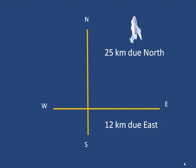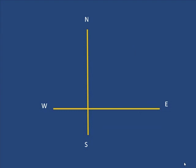I can represent these motions by two lines with arrows. One east, one north, 12 kilometers east, 25 kilometers north.